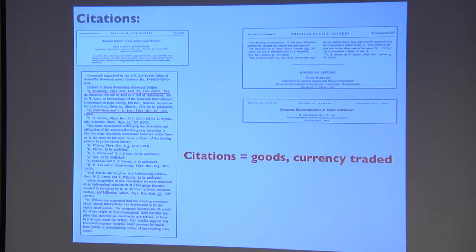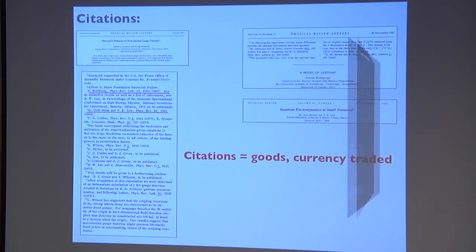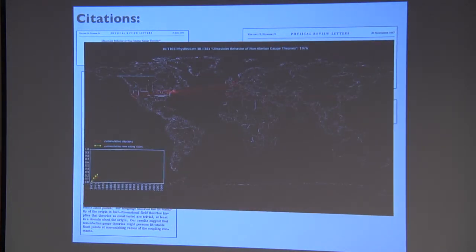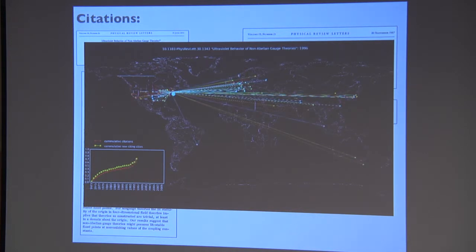We can consider that Gross and Wilczek basically invested, created some debts, and borrowed units of knowledge from Weinberg and Gelman, and developed some credit. Here are all the cities that actually cite Gross and Wilczek back. The moving ball is the centroid of the team that tells you where the most citations are coming from. It was a pretty good investment — most of the cities with a physics department cite this amazing paper.